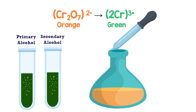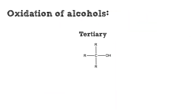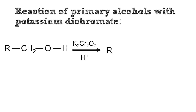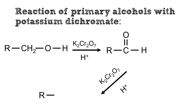The tertiary alcohols don't react with potassium dichromate, but how do the primary and secondary alcohols react? The primary alcohols are oxidized into aldehydes, and can be further oxidized by excess potassium dichromate into carboxylic acids.